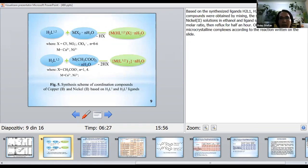Based on the synthesized ligands H2L1 and H2L2, 12 coordination compounds were obtained by mixing the salts solution of copper-2 and nickel-2 solution in ethanol and ligand solution in ethanol in a 1 to 1 molar ratio, then reflux for half an hour, obtaining a green microcrystalline complex according to the reaction written on the slide.